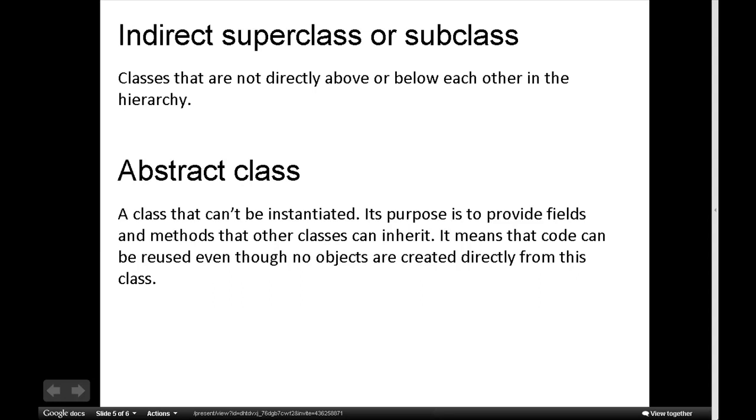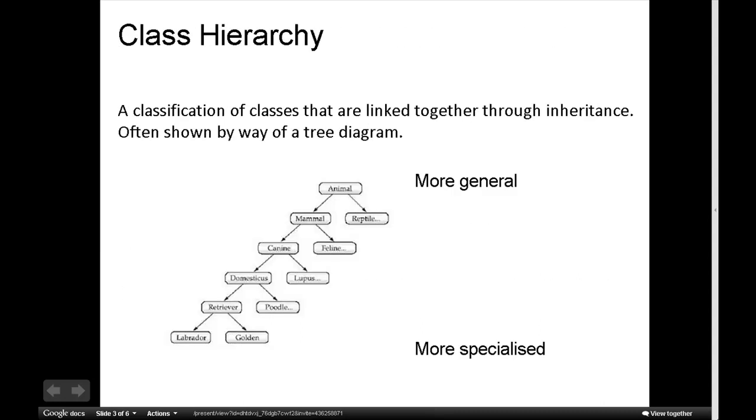When we talk about indirect superclasses or subclasses, we're talking about classes that are not directly above or below each other in the hierarchy. In this diagram, domesticus is an indirect subclass of labrador.